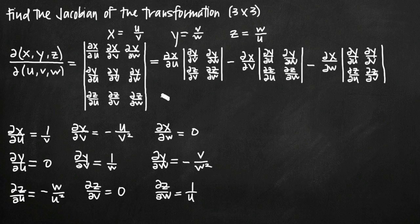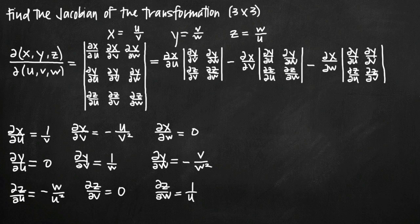Now we want to go ahead and plug them into their spots in this matrix. We take the partial derivative of x with respect to u, which is 1 over v, and plug it in here. Then the partial derivative of x with respect to v, which is negative u over v squared, goes here, and so on until we've written out the full matrix.